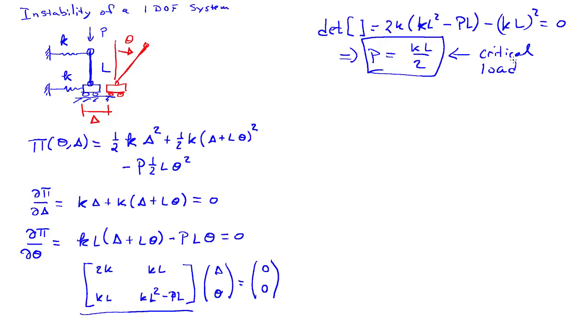That's the load at which I can have a non-trivial solution. And I can plug this load back into these equations if I'd like to determine the form of the solution. So in other words, determine the eigenvector at P equals K L over 2. And I can use either equation. I can use the first equation or the second equation. So let's just go ahead and use the first one since it's simpler. It actually doesn't depend on P. So I'll have 2K delta plus K L theta equals zero.